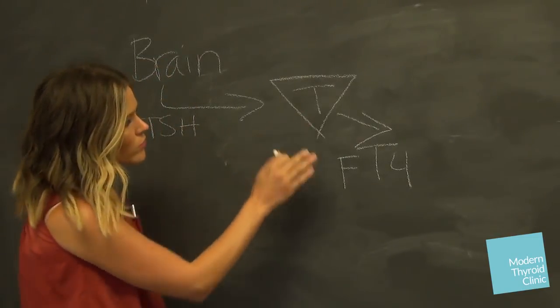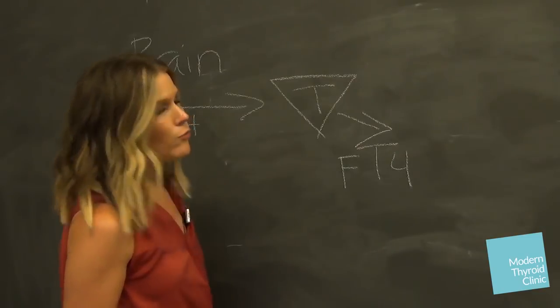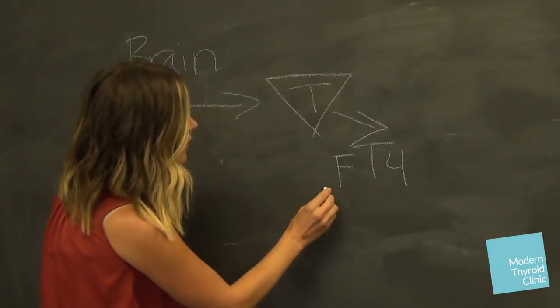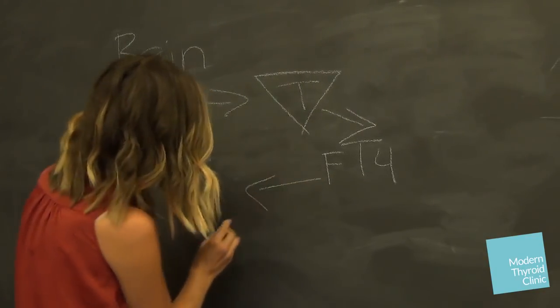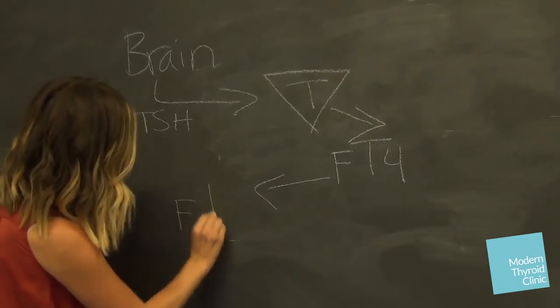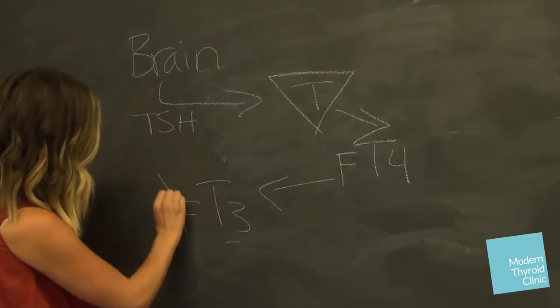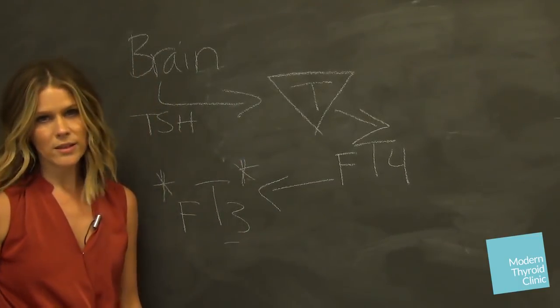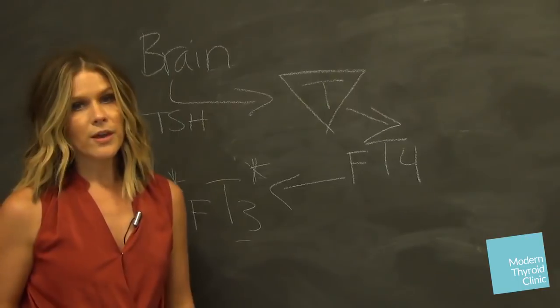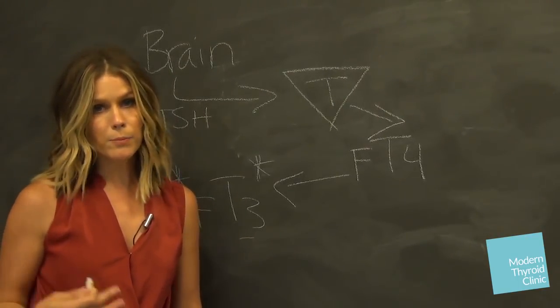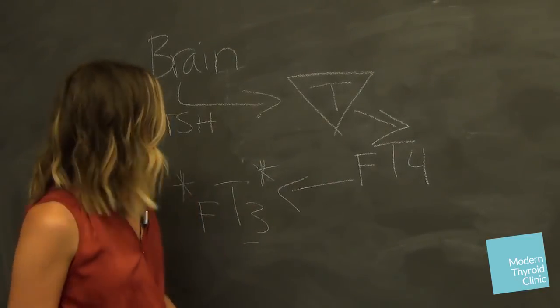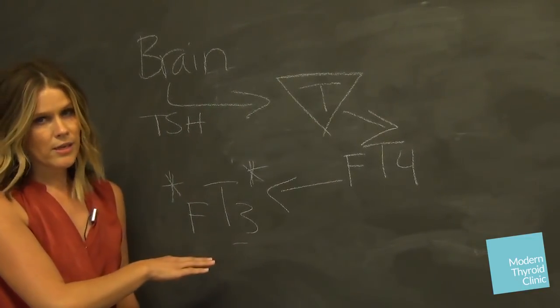So thyroid secretes free T4, and really one of two things happen, well one of three things actually. Either your T4 is converted to what we want it to be converted to, free T3. This is our money maker, this is our thyroid gasoline. It's really the only thing that dictates whether you're hyper, hypo, or just right, euthyroid. So everything relies on this T3.